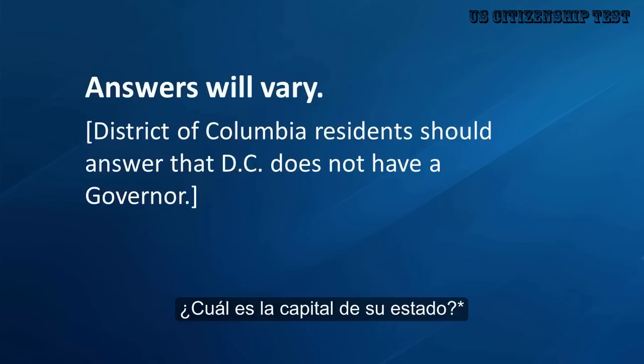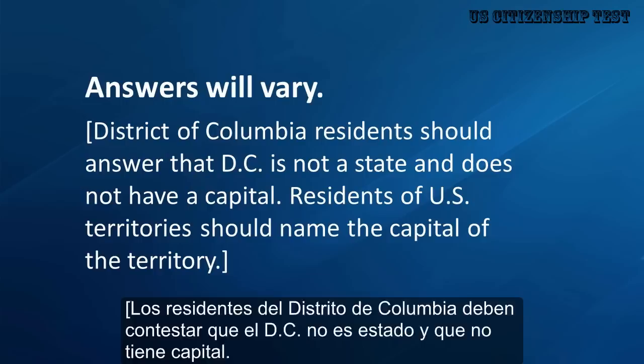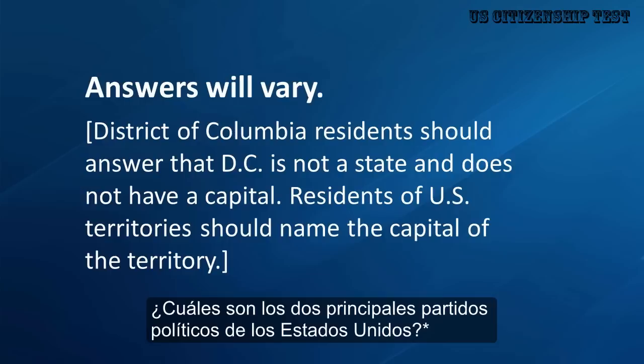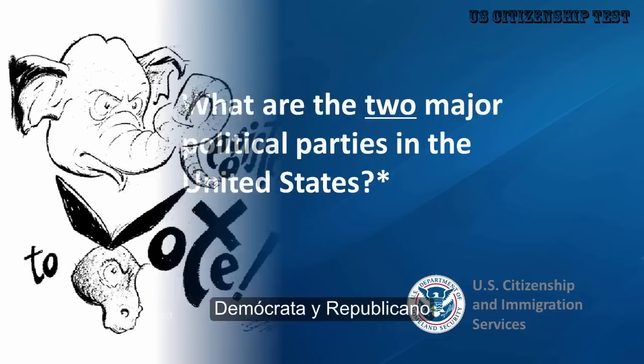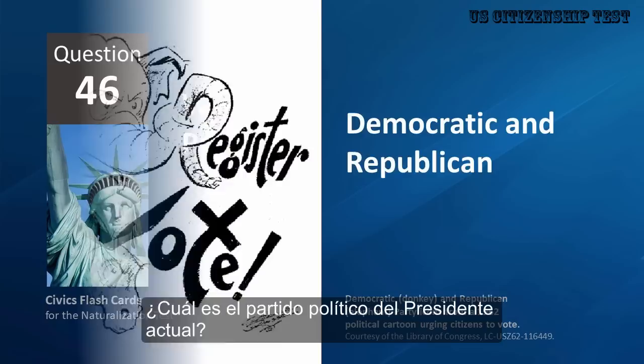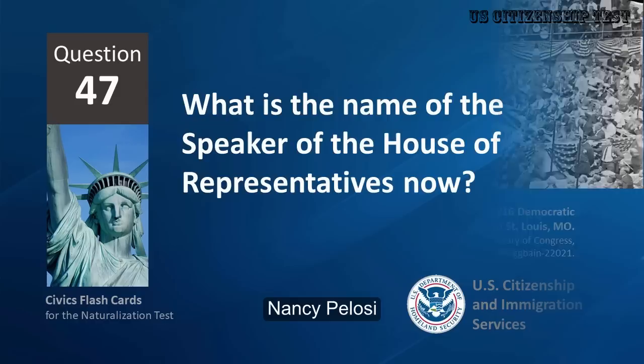Who is the governor of your state now? Answers will vary. District of Columbia residents should answer that D.C. does not have a governor. What are the two major political parties in the United States? Democratic and Republican. What is the political party of the President now? Democratic Party.